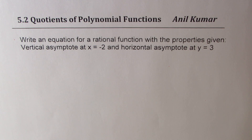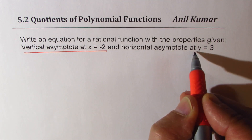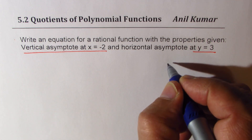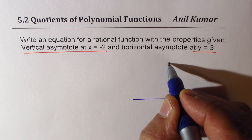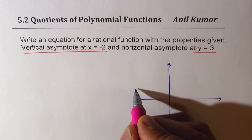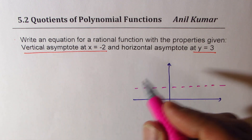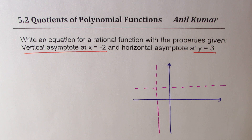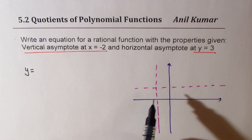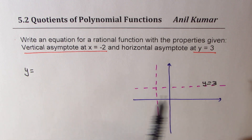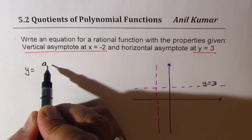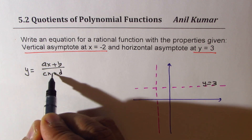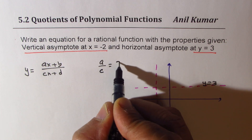Now let's take the next example: write an equation of a rational function with the given properties. This time we are given a vertical asymptote and a horizontal asymptote. On a graph, we can plot these two: horizontal asymptote at y equals 3 and vertical asymptote at x equals -2. To get both these, you could write the equation as y equals (ax plus b) over (cx plus d), where a over c should equal 3.